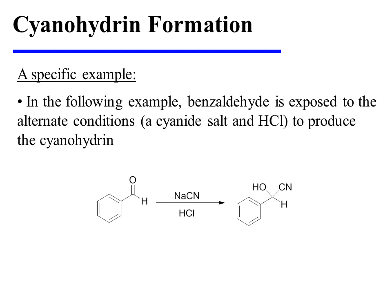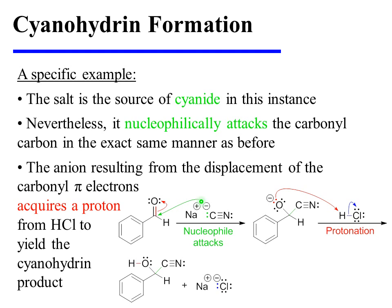In the following specific example, benzaldehyde is exposed to the alternative conditions — a cyanide salt and acid — to produce the cyanohydrin. The salt is the source of cyanide in this instance. Nevertheless, it nucleophilically attacks the carbonyl carbon in the exact same manner as before. The anion, resulting from the displacement of the carbonyl pi electrons, then acquires a proton from HCl to yield the cyanohydrin product.